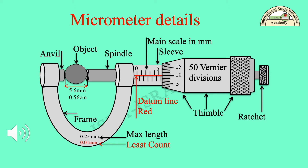A ratchet is also shown on the extreme right of this instrument, which is used to apply proper pressure onto the object held between the anvil and spindle. A horizontal millimeter scale is engraved on the sleeve representing the main scale reading. 50 vertical Vernier divisions are also visible on the thimble.